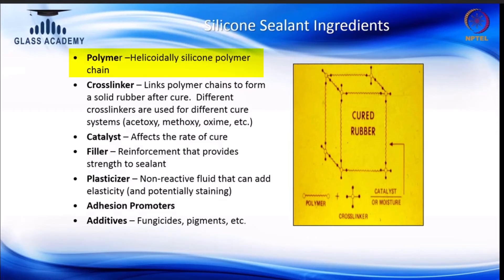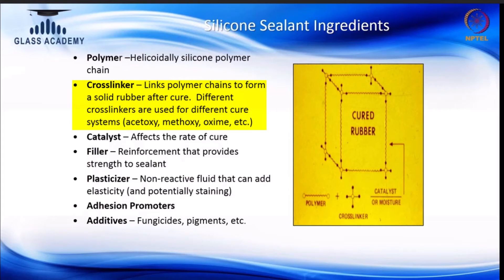The siloxane polymer has to be added to make the sealant. The amount of polymer added varies the properties, and this is the essential backbone which gives very good mechanical, physical, as well as other important properties to the product. You have to cross-link them because this becomes a cross-linked rubber. For cross-linking, you need different cross-linkers to be added — there is a polymer chain and you need to cross-link them to make it a matrix. To make this reaction happen at the right pace, catalysts are added, and this takes care of the rate of cure.